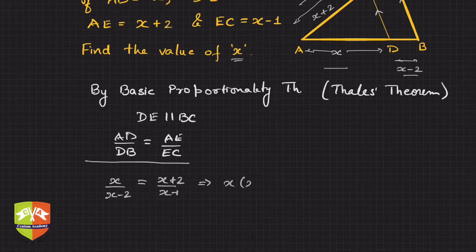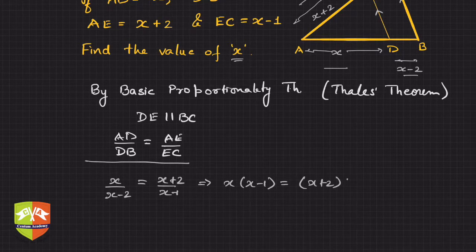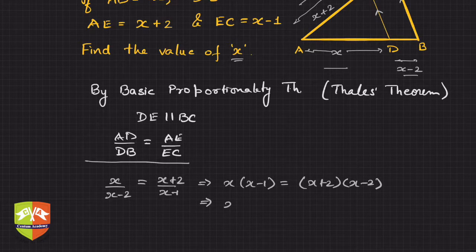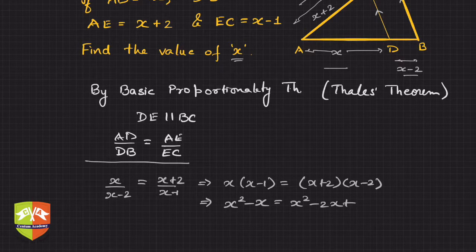Now it's simple rearrangement and solving. Cross multiplying: x times (x minus 1) equals (x plus 2) times (x minus 2). Opening the brackets: x squared minus x equals x squared minus 2x plus 2x minus 4.